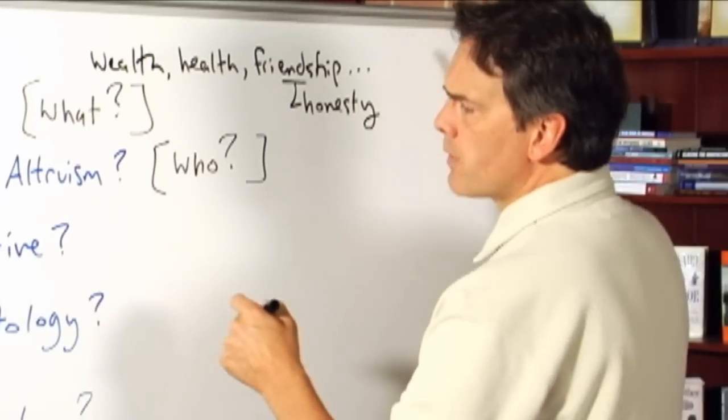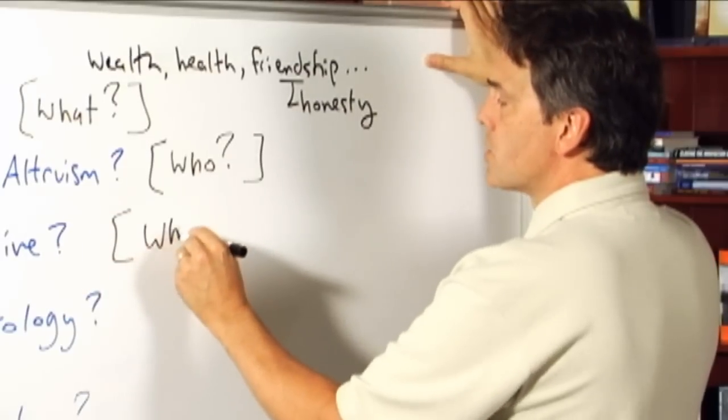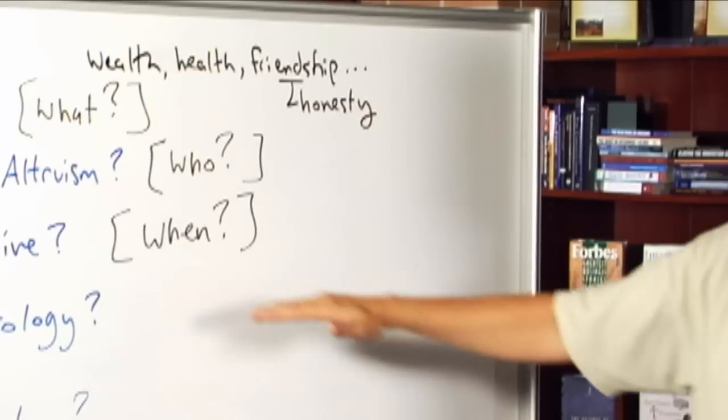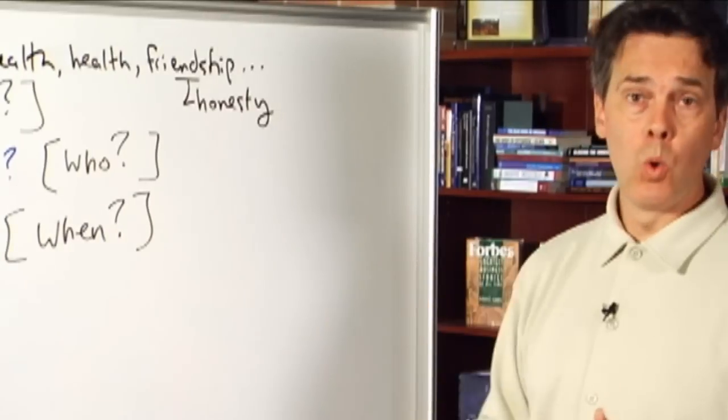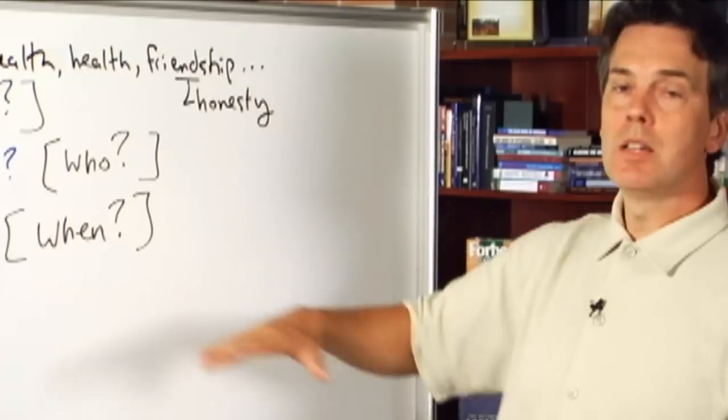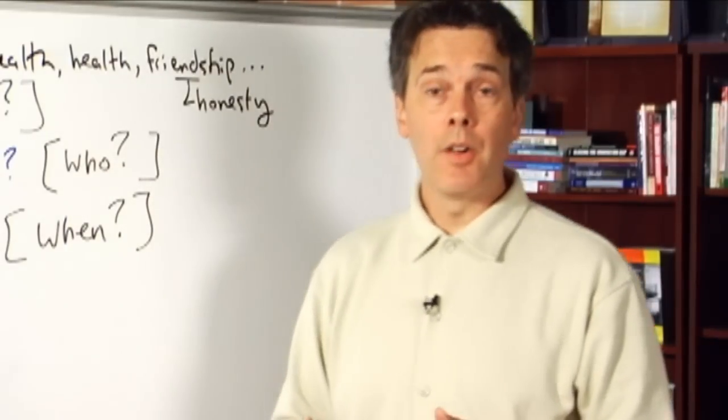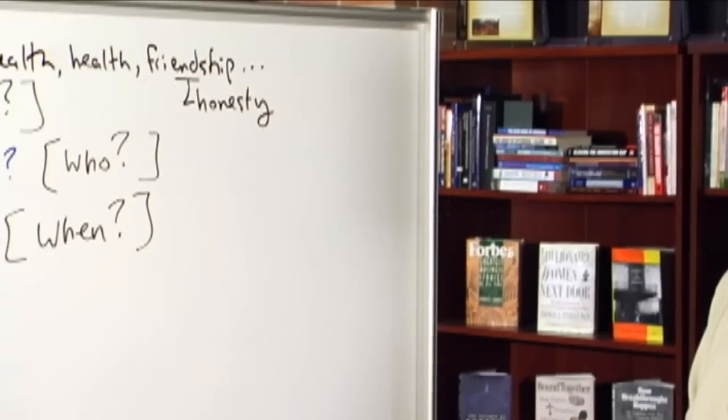Number three, the issue of universality and relativity of values. Here the interrogative is the question of when, or under what circumstances. Is it the case that at all times the ethical principles, the ethical values hold no matter what the circumstance? Or is it the case that different ethical principles and different ethical values come into play under different circumstances and at different times? So here we're asking the question of when.